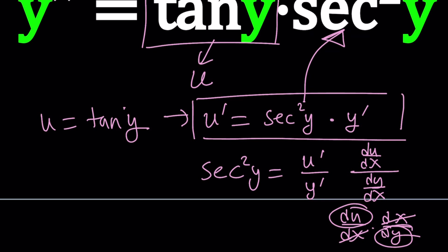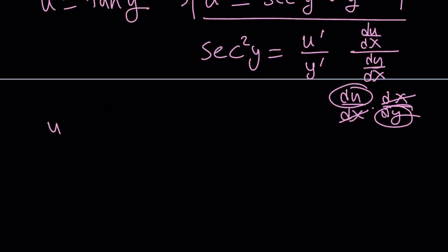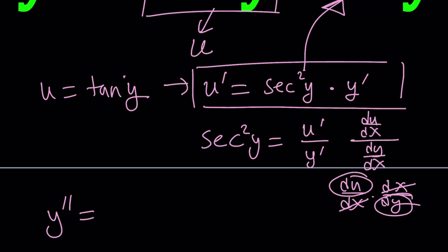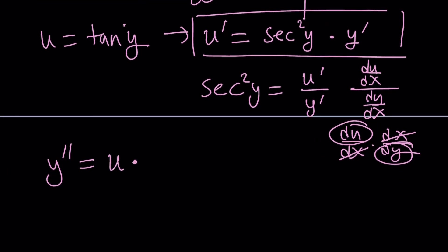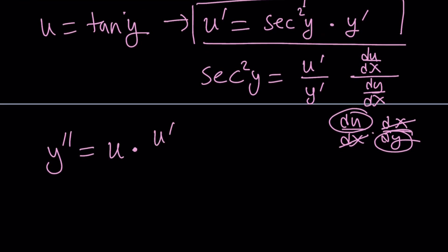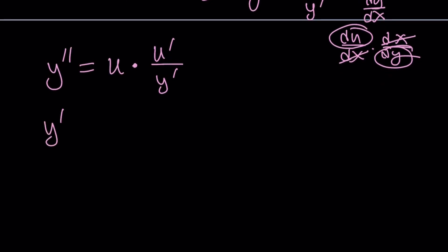Let's go ahead and plug it in. We have y double prime on the left-hand side. And on the right-hand side, we have tangent y, which is u. And then secant squared is u prime divided by y prime. Now, I have y prime and y double prime, which is good. And I can put them on the same side. Let's multiply y prime times y double prime equals u times u prime. So it's kind of like a function times its derivative and another function times its derivative.